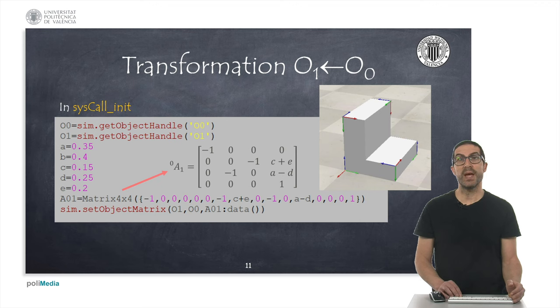To make the exercise easier, I show here the necessary code that you must include in the dummy script, well, actually it's included in the dummy script, to set the position and orientation of reference frame O1 with respect to O0. So, your task is now to do the same thing, but with the remainder of reference frames.